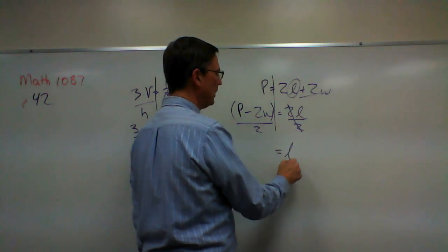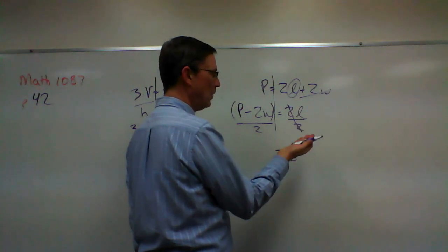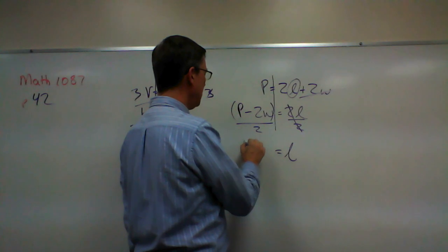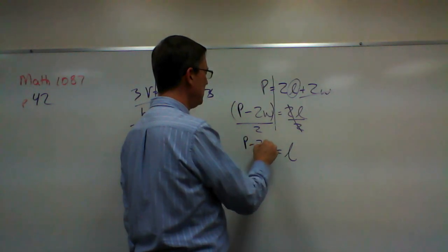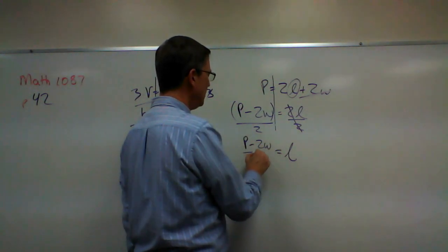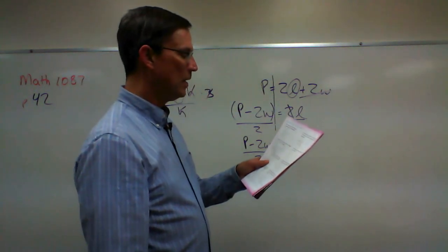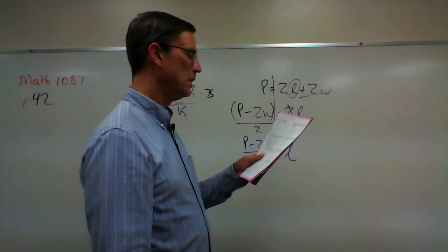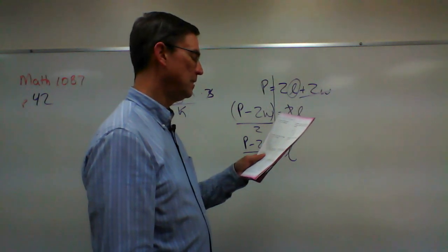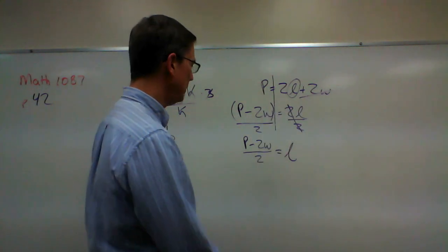So now I have a new formula. Length, this is what they're asking me to solve for. And the formula is p minus two w. Take that whole thing and divide by two. Now they tell us that the perimeter is 256 and the width is 36.